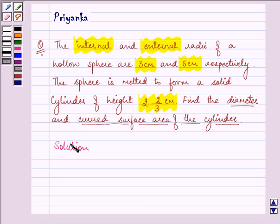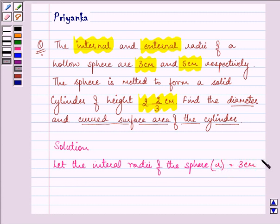First of all, let the internal radius of the sphere r be equal to 3 cm. Therefore, the external radius of the sphere, let it be capital R, be equal to 5 cm.